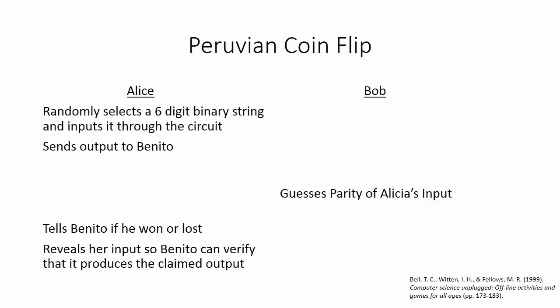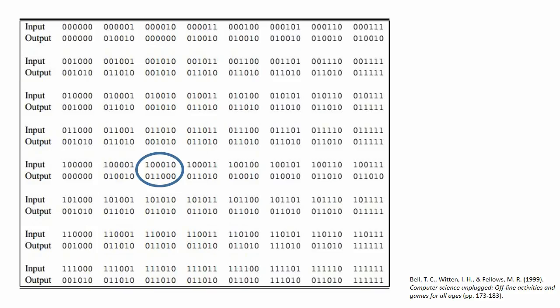After he has selected his guess, he sends this guess to Alice, and Alice will tell Bob if he is correct. After Alice receives Bob's guess, she tells him if he is right or wrong. Then she reveals her input so that Bob can verify that it produces the claimed output.